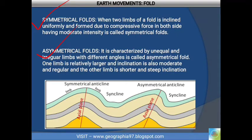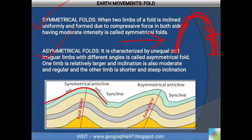Symmetrical fold: when the two limbs of the fold incline uniformly due to compressive force from both sides — the inclination is uniform and the force is of moderate intensity — that is called a symmetrical fold. When the limbs are unequal and irregular with different angles, one side inclination being moderate and another being steep, that is called an asymmetrical fold.